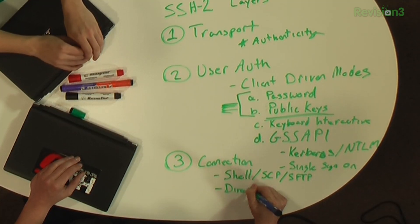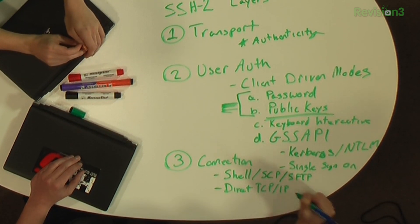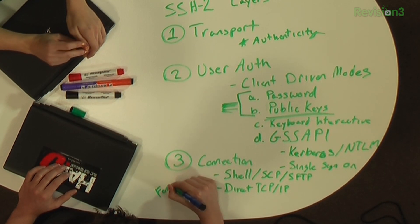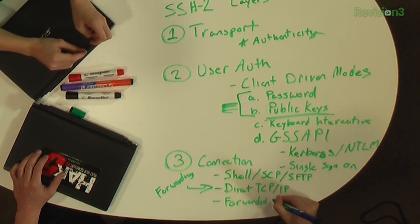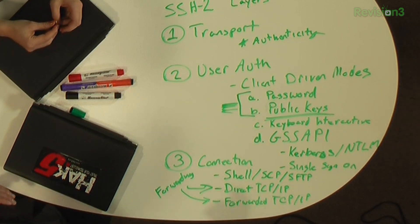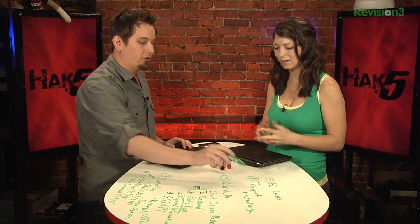There are other channels — we've already talked about them in practice. The first is direct TCP/IP, which is for client-to-server forwards. Then there is forwarded TCP/IP, which is for server-to-client. We talked about this when discussing dynamic versus local versus remote forwarding.